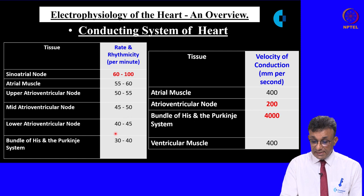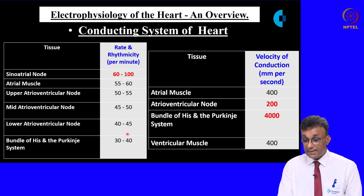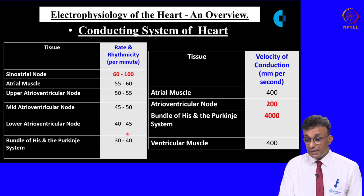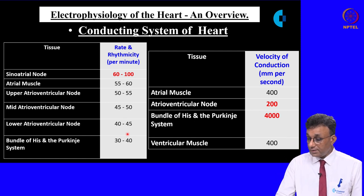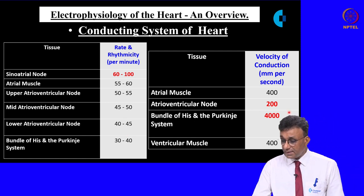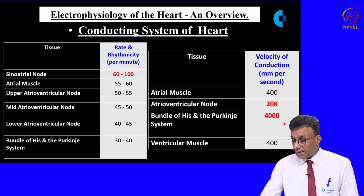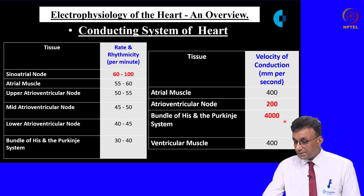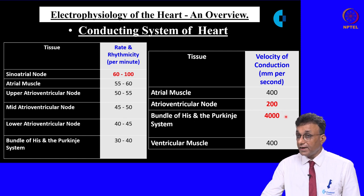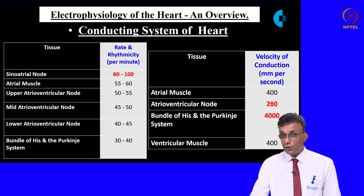This slide shows two important electrical properties: rate and rhythmicity, and velocity of conduction. The rate and rhythmicity of a cardiac impulse is greatest at the sinoatrial node. The fastest velocity of cardiac impulse conduction occurs in the bundle of His and Purkinje system, while the slowest velocity occurs at the atrioventricular node.